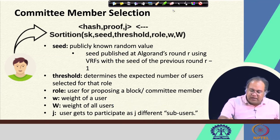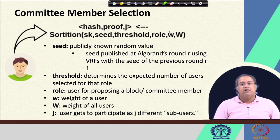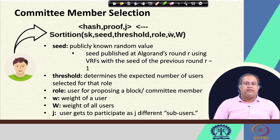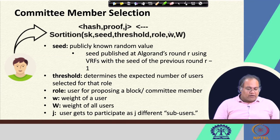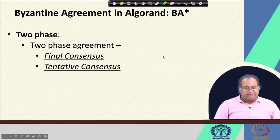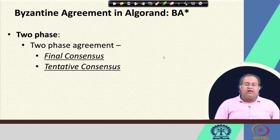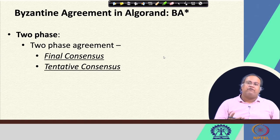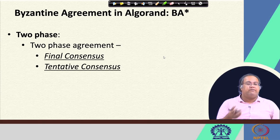The hash and corresponding proof help validate that the cryptographic sortition mechanism was correctly run using the verifiable random function, and that whatever information is claimed through the gossip protocol is correct information. Once committee members are selected, the next task is to run the Byzantine agreement protocol. Algorand runs this Byzantine agreement in two phases: something called final consensus and another thing called tentative consensus.